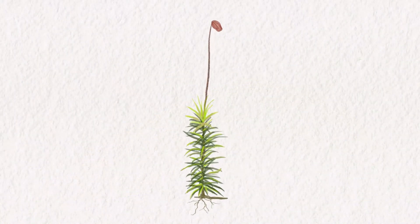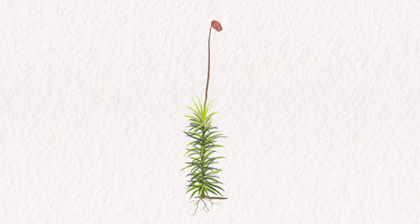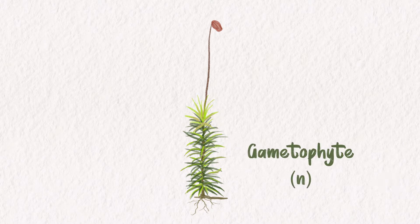This is a single piece of moss with a mature sporophyte. The familiar green fuzzy stuff is the gametophyte haploid phase. The stalk rising out of the moss is the sporophyte phase.